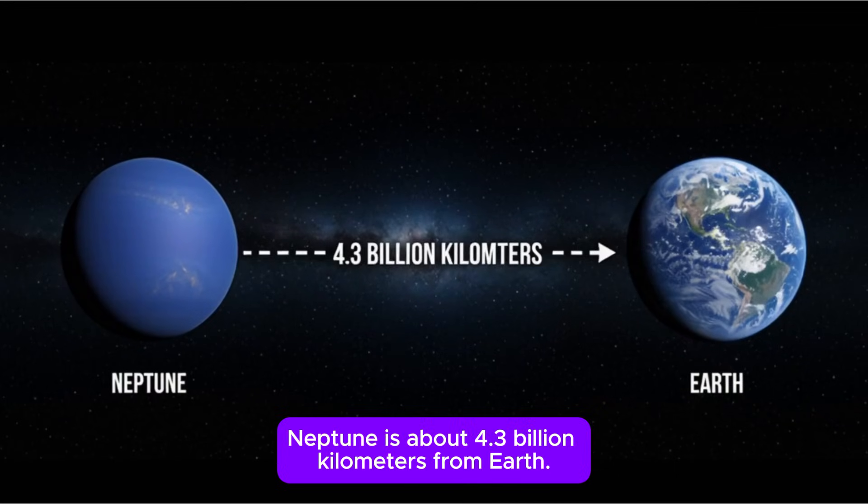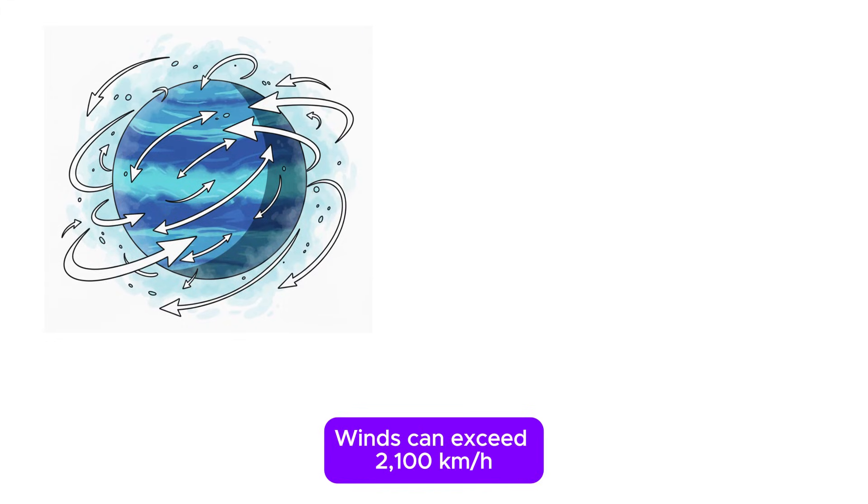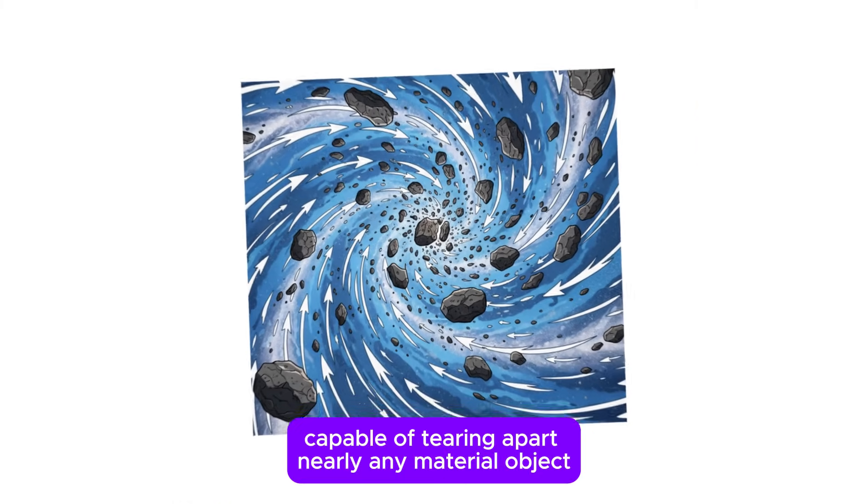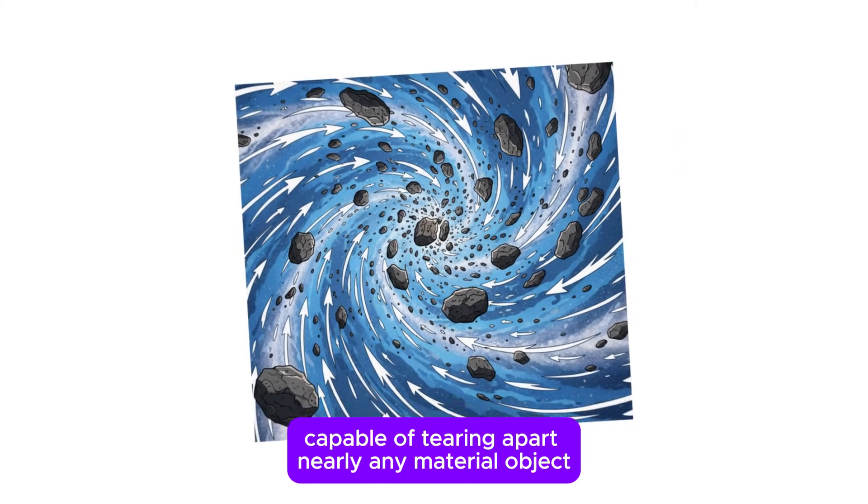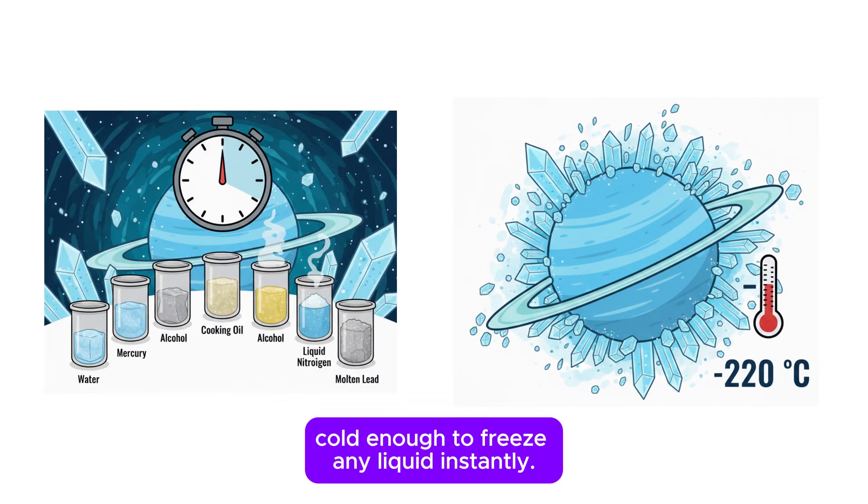Neptune. Neptune is about 4.3 billion kilometers from Earth. Winds can exceed 2,100 kilometers per hour, the fastest in the solar system, capable of tearing apart nearly any material object. Temperatures reach negative 220 degrees Celsius, cold enough to freeze any liquid instantly.